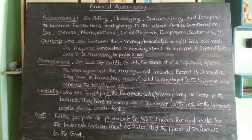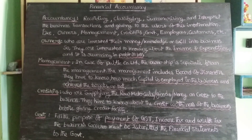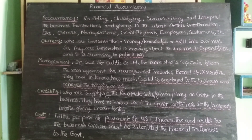In case the business makes a net profit, income tax will be paid. Wealth tax is also paid on assets. The financial statements must be submitted to the government before payment of any taxes — GST, income tax, and wealth tax. For the purpose of payment of these taxes, the business concerns must submit financial statements to the government. This is the first class. Thank you.